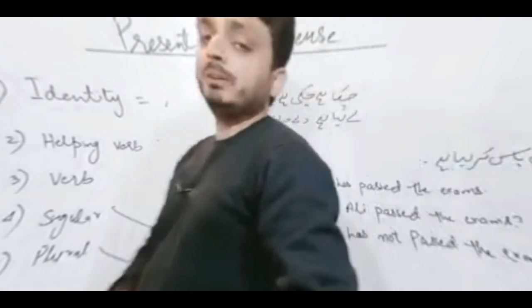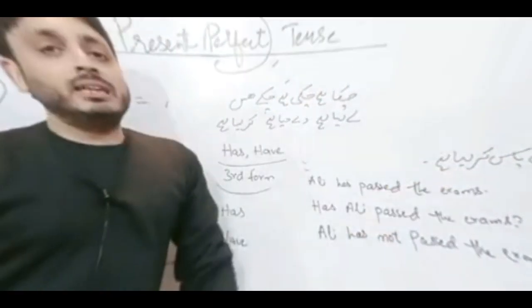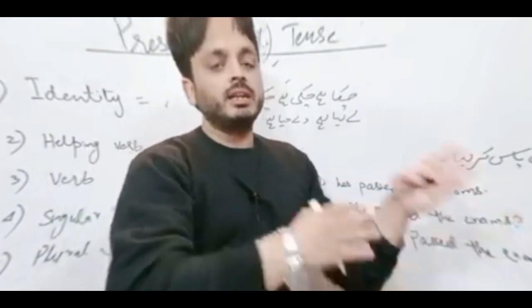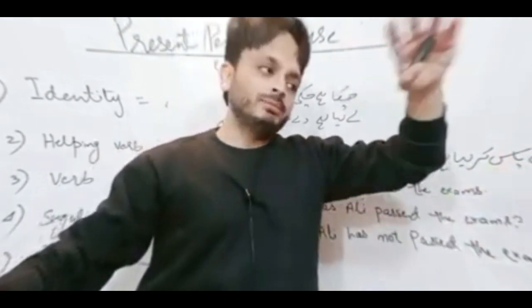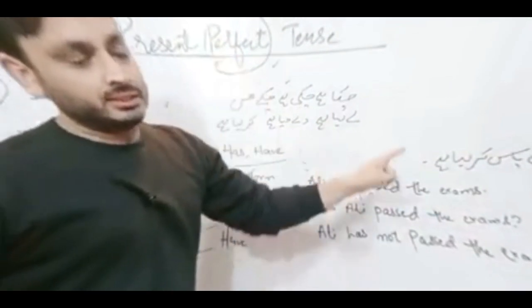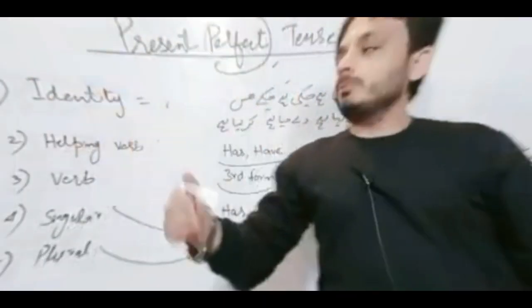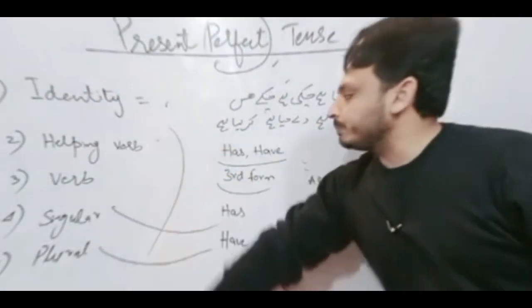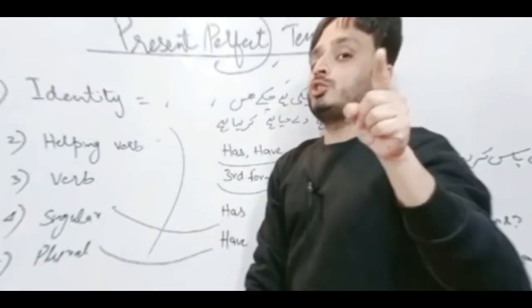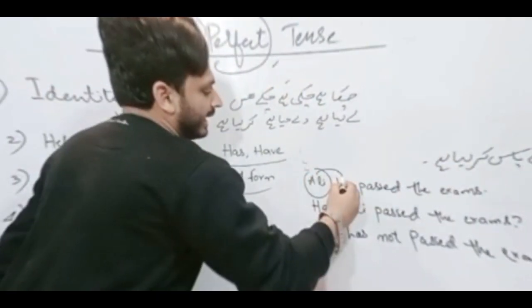With singular we will use 'has' as a helping verb, and with plural we will use 'have'. Now let's see an example: 'Ali has passed' — it means the action of passing the exam has been done in the present. This is present perfect tense. Once you have decided the tense is present perfect, come to your formula and apply it: helping verb, verb, singular, plural. So: Ali has passed the exam.